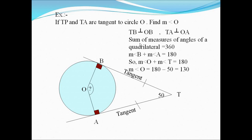Let's review the steps. TB is perpendicular to OB, and TA is perpendicular to OA. The sum of interior angles of the quadrilateral equals 360 degrees. So angle T plus angle O equals 180 degrees. Therefore, measure of angle O equals 180 minus 50, which gives 130 degrees.